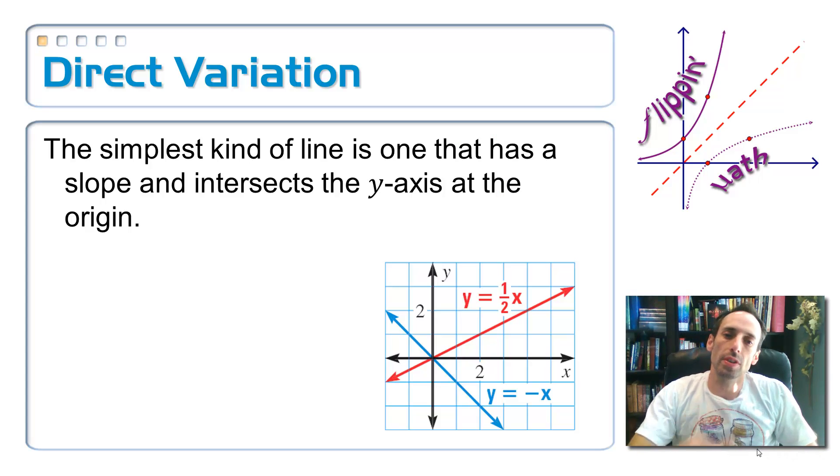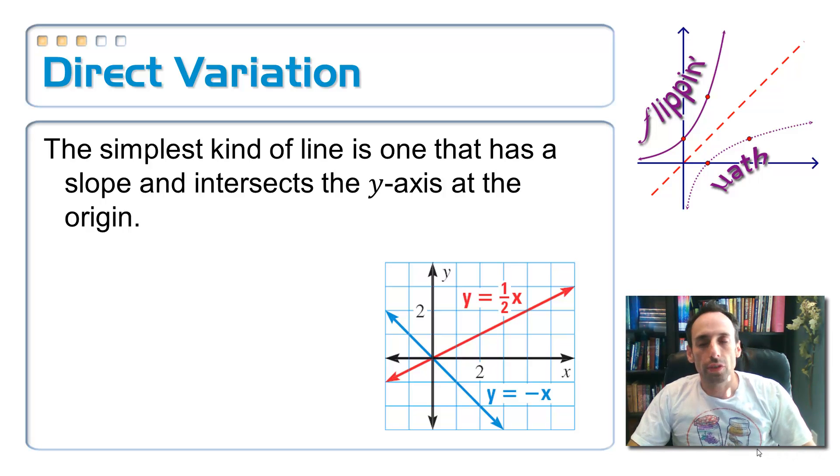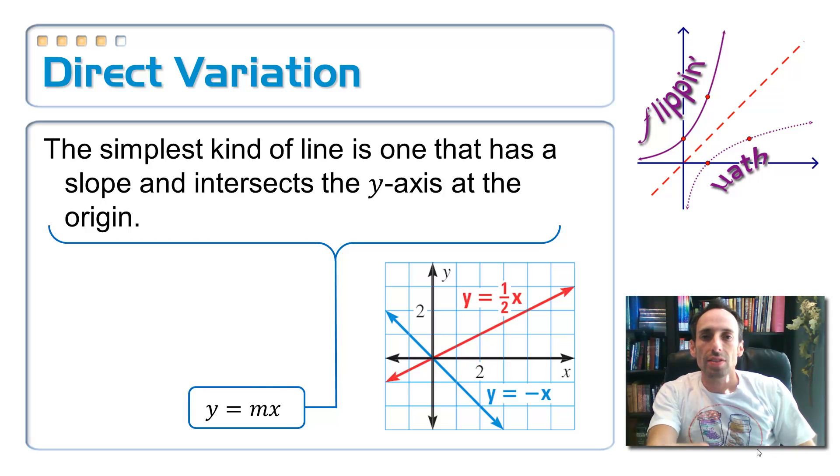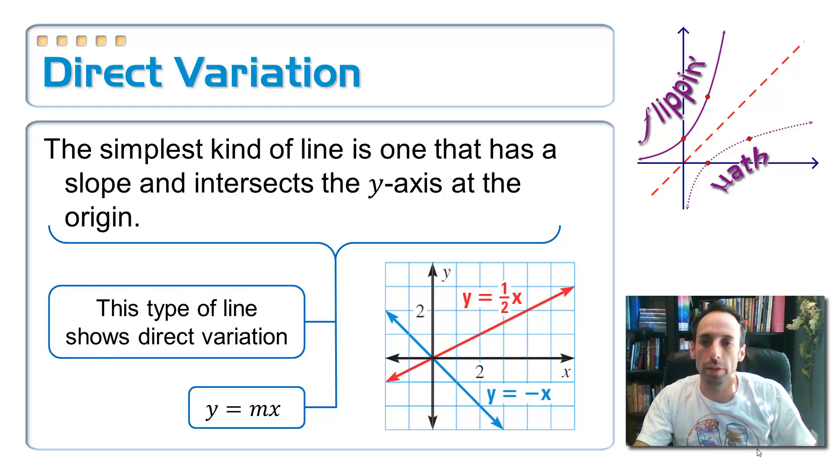Okay, the simplest kind of line is one that has a slope and goes through the origin, like the two that are in the picture here. This just has a simple equation, y equals mx. The slope and the line are set to zero, so you don't have to write it down. We have two that are in the picture. We have y equals a half x, and y equals negative x. This is a type of line that shows direct variation.